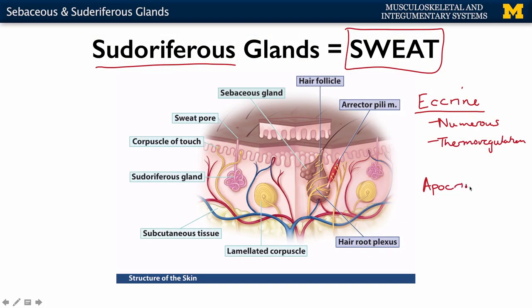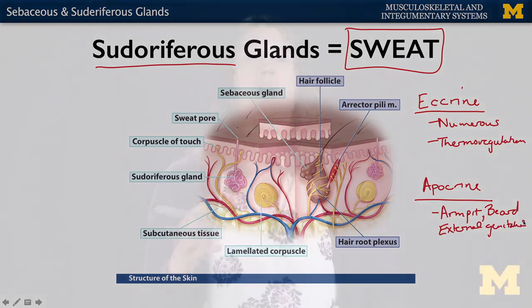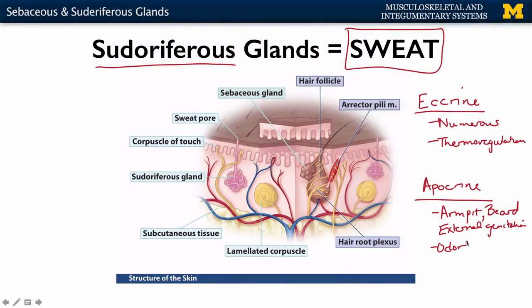The other type of sweat gland is apocrine. These are far less numerous and are found in specific areas of the body — the armpit or axillary region, beard region, and external genitalia. These sweat glands are activated in times of sexual excitement or embarrassment, and they have an odor associated with them. They are considerably less numerous than eccrine glands and have fairly different functions. These are the main ideas to understand in terms of the glands, and we'll come back to these in later discussions of the endocrine system.